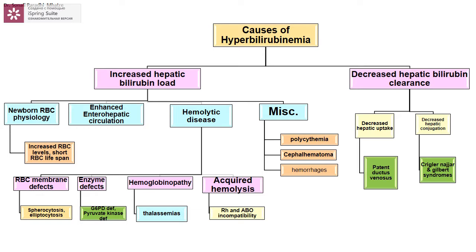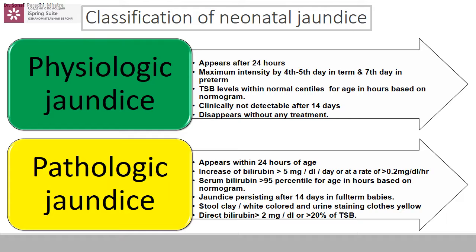Bruises or hematomas anywhere in the body cause stagnation and increased RBC breakdown, contributing to increased hepatic bilirubin load. Decreased hepatic clearance can be due to decreased hepatic uptake — seen in patent ductus venosus — or decreased hepatic conjugation, as seen in syndromes like Crigler-Najjar syndrome and Gilbert syndrome.